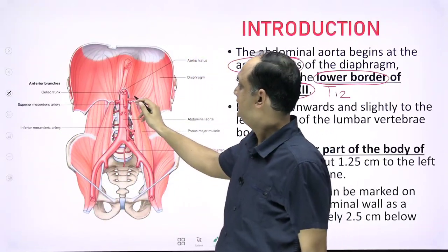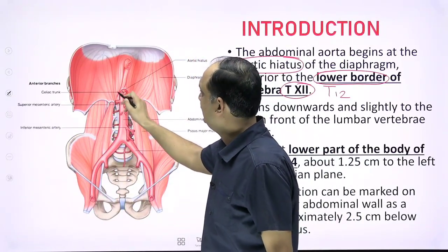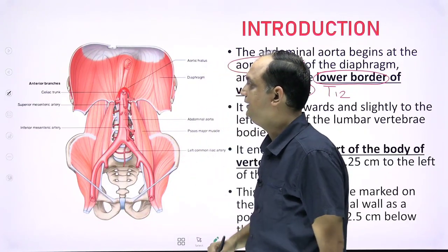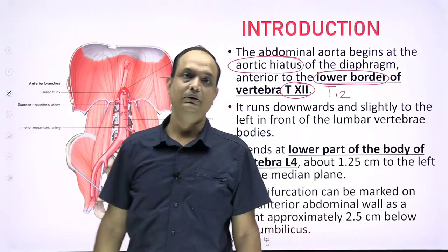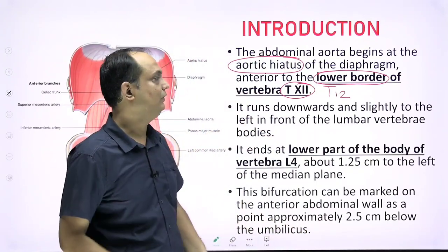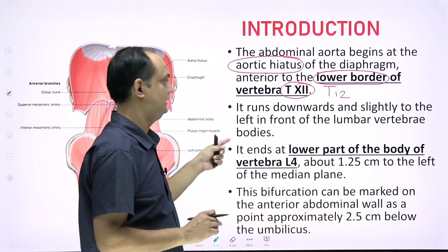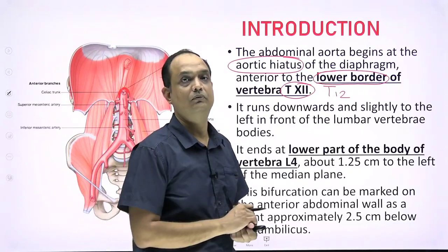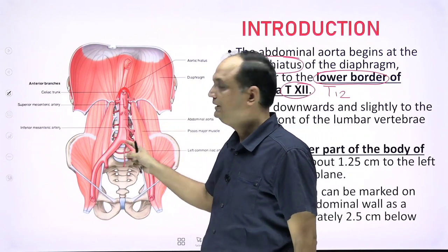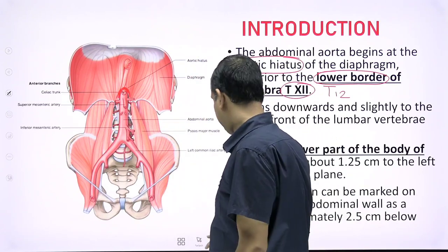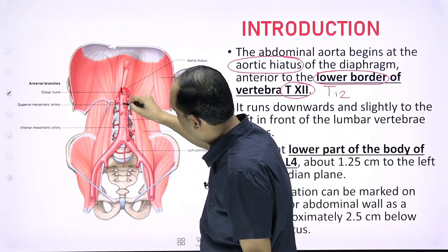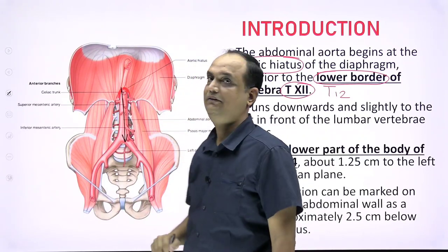In this image you can see the hiatus providing entry of the aorta into the abdominal cavity. It runs downward slightly to the left on the front of the lumbar vertebrae. When you see the posterior abdominal wall, the abdominal aorta does not run vertically downward but tilts slightly towards the left side.